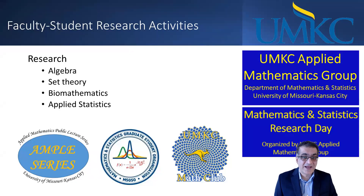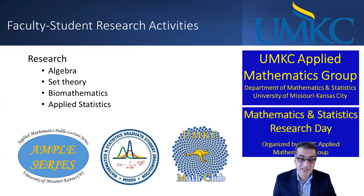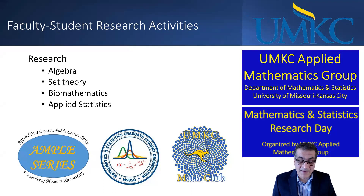The first slide is about faculty student research activities. Our department is active in research areas such as algebra, set theory, biomathematics, and applied statistics. Faculty and students work together. They present and publish their research within our department. There are activities such as the Applied Math public lecture series, Math and Stat Research Day, and activities supported by UMKC Applied Math Group.